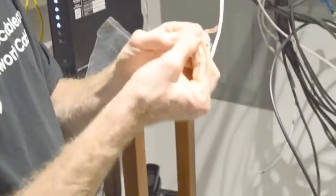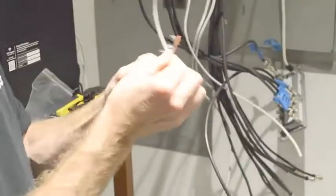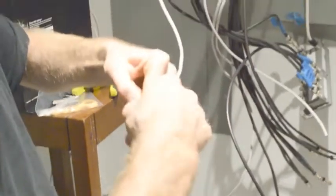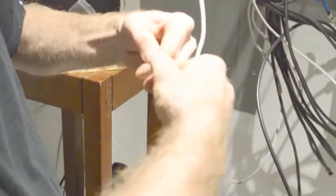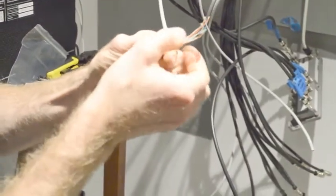Orange white, orange, green white, blue, blue white, green, brown white, brown. So there it is. They're all together. They're nice and flat. They're straight and they're in the right sequence.